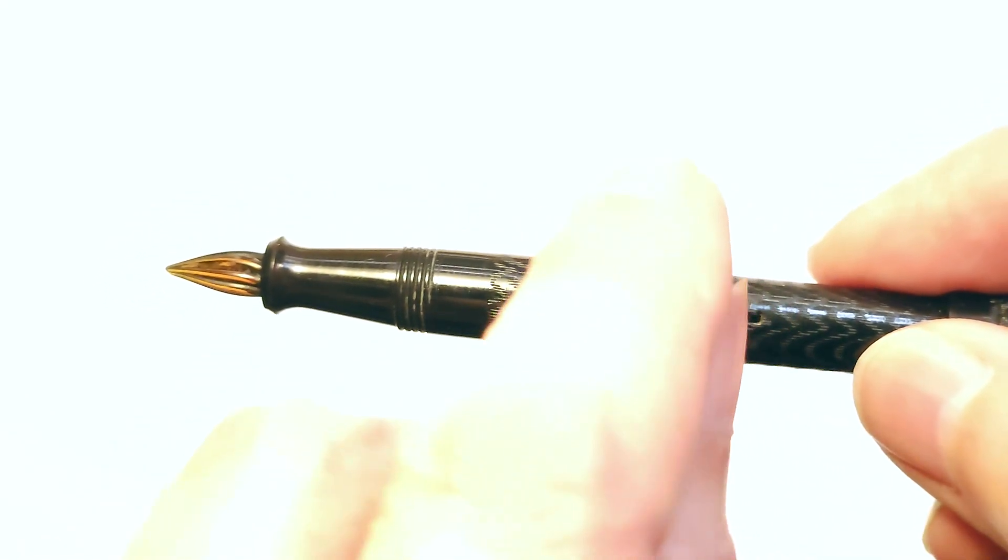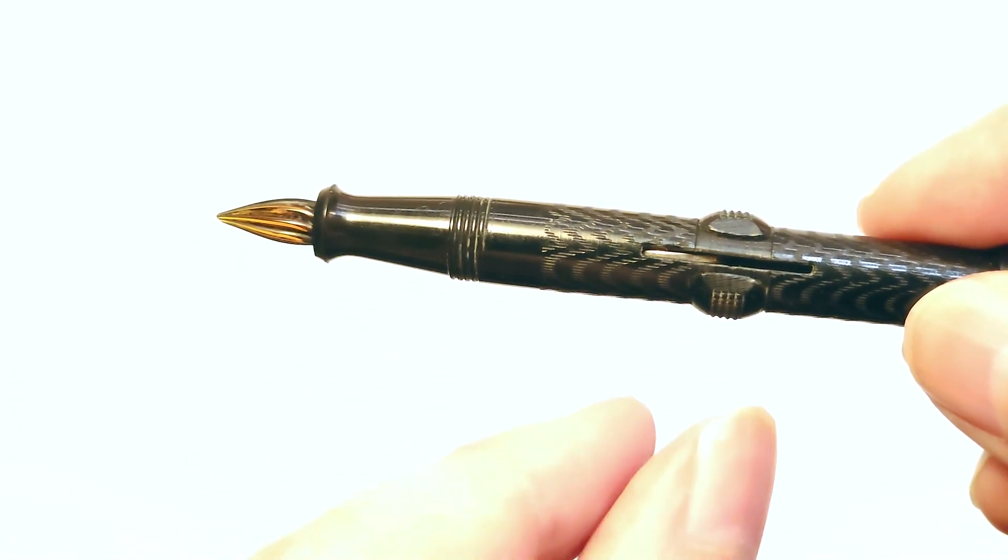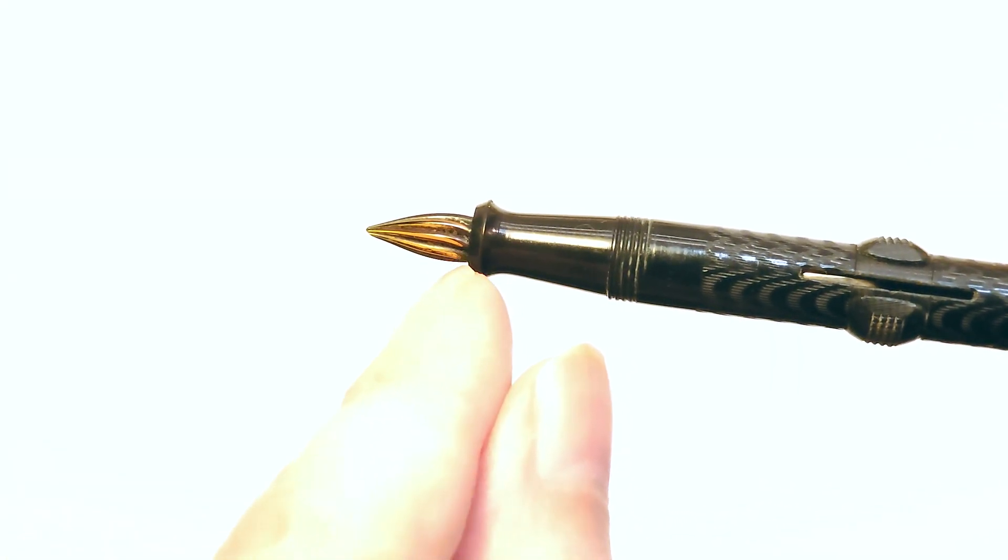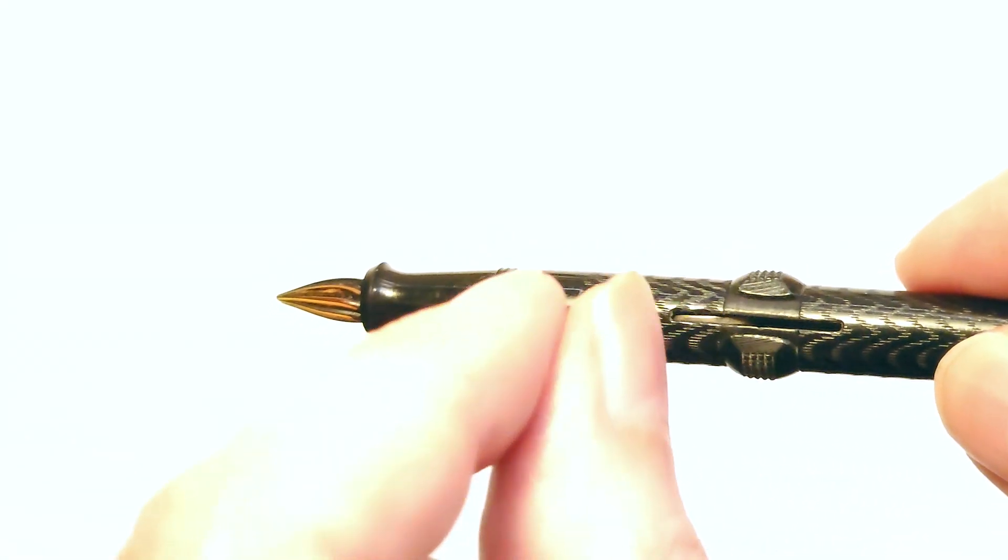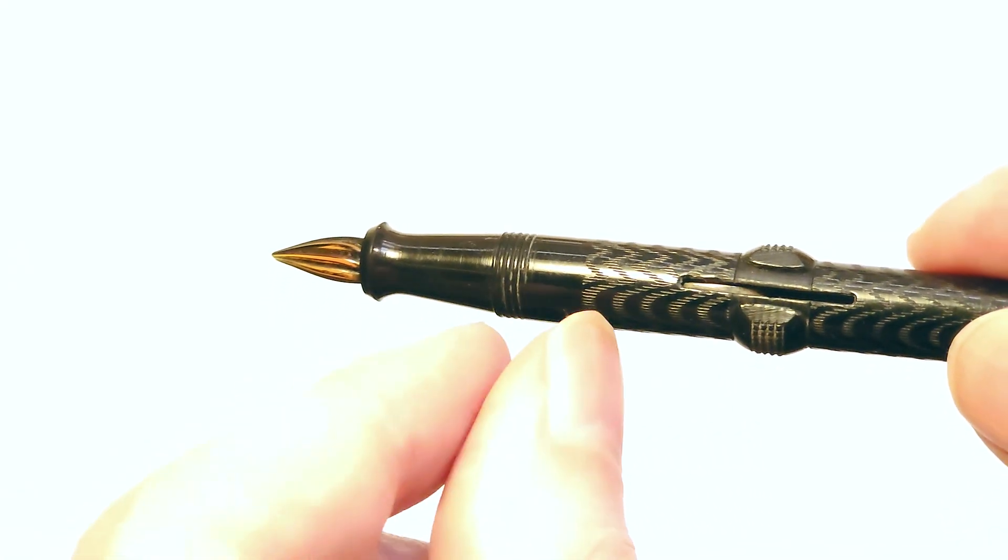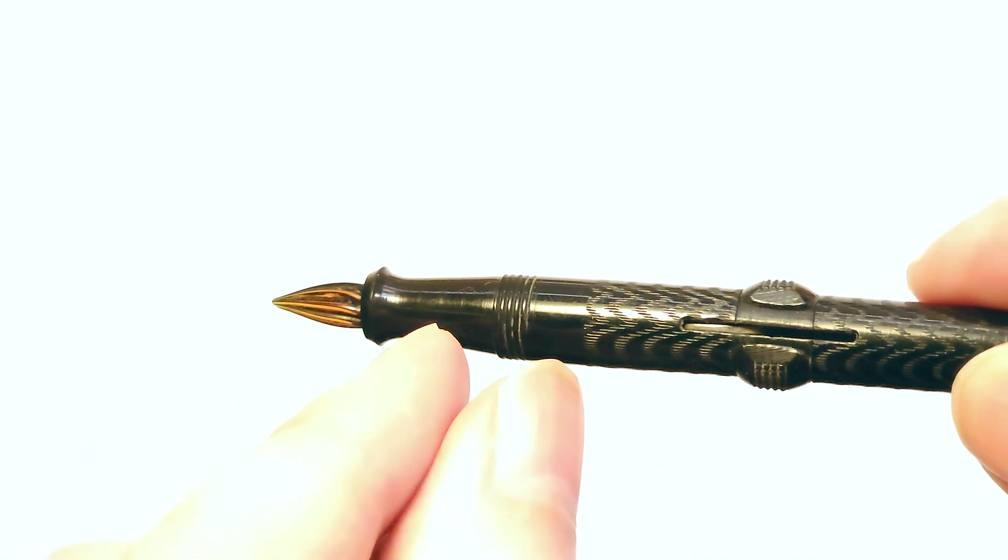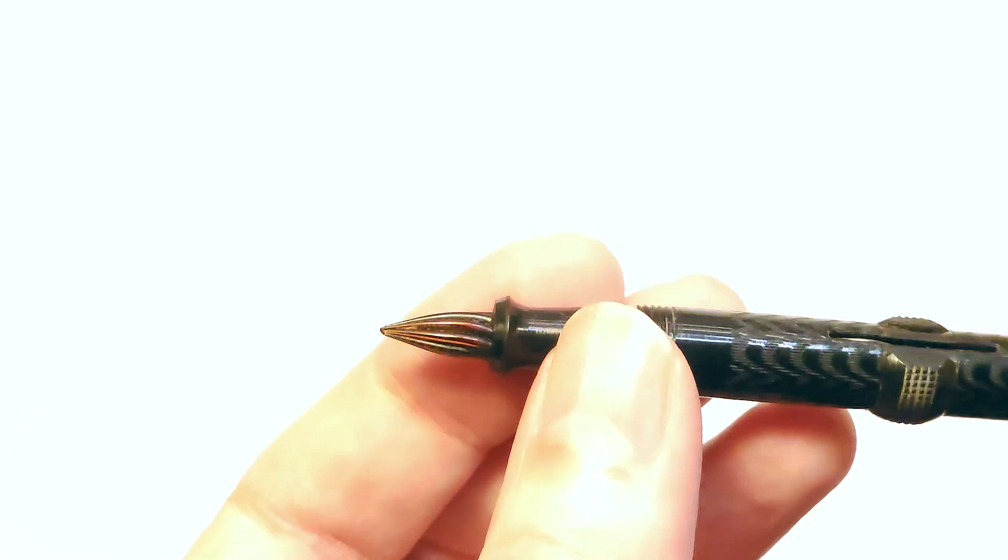And when you would pull up on the lever, it would compress the bladder, which is a little rubber balloon, and by compressing the bladder, it would force the air out through the tip. And so you would have this submerged in an inkwell. You'd pull out the lever, it would squeeze out the air, and then when you pop the lever back in, the bladder would return to its regular shape, and in the process it would draw the ink up into the reservoir, and then you'd write with it.